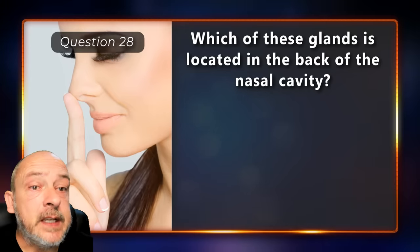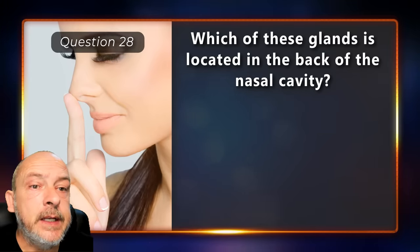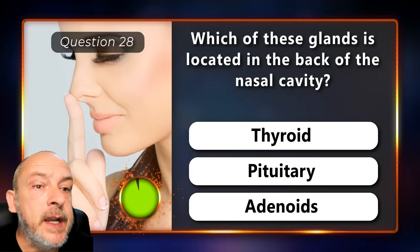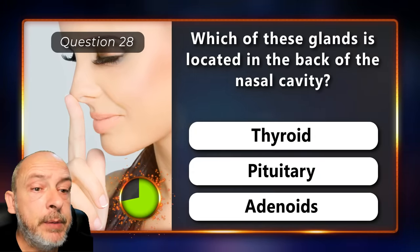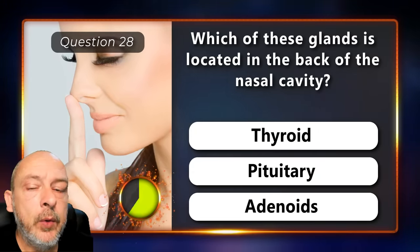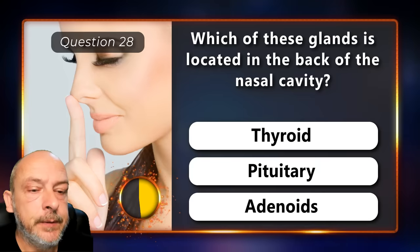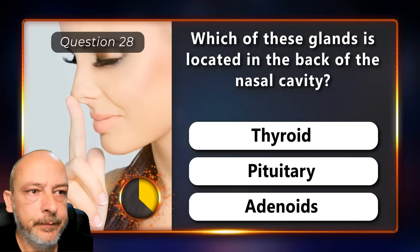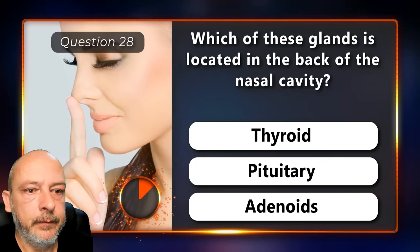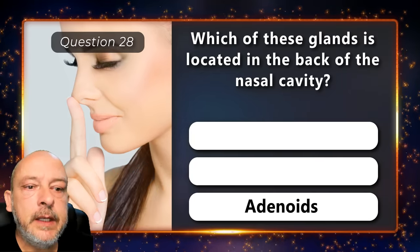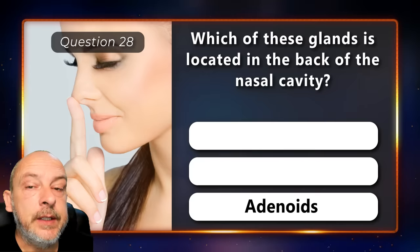Which of these glands is located in the back of the nasal cavity — the thyroid, pituitary, or the adenoids? It is the adenoids.